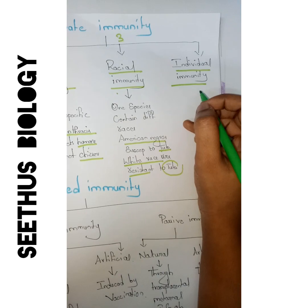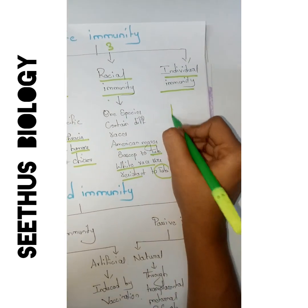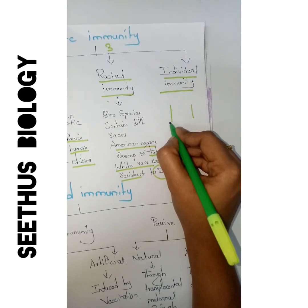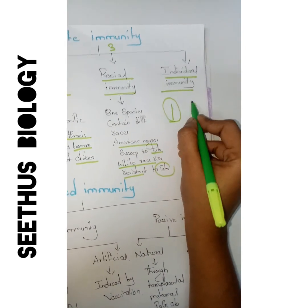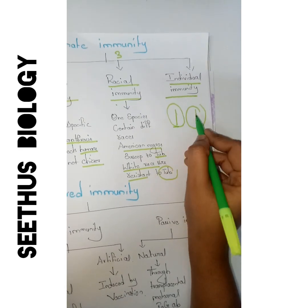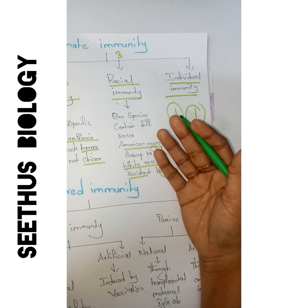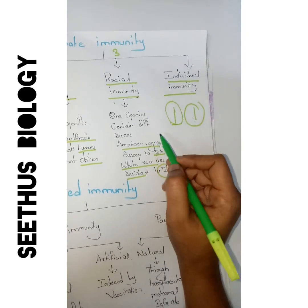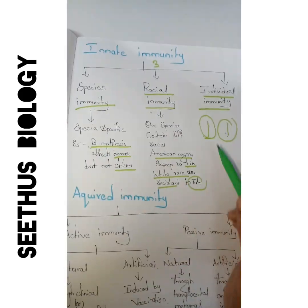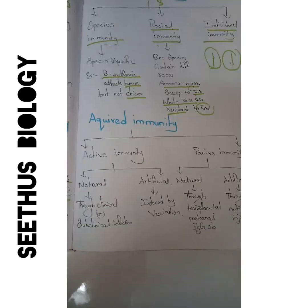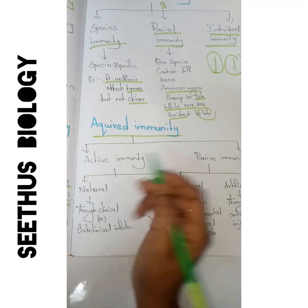Individual immunity is based on the individual. For example, if two persons are there, one person may be attacked with fevers or illness while the other remains healthy. This is because of their food habits and individual life processes — based on these factors, individual immunity may build up. These are the three different types of innate immunity.